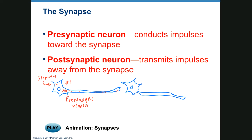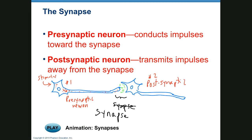At the end of the axon, the action potential causes the release of a neurotransmitter into the space between the two neurons, called the synapse or synaptic space. Neuron number two is the postsynaptic neuron, and it has receptors for the neurotransmitter on its surface. The neurotransmitter binds to the receptors, causing the opening of ion channels.